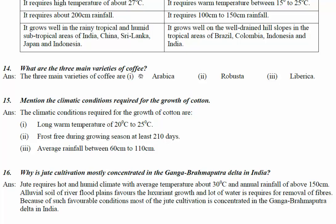Question number 14: what are the three main varieties of coffee? They are Arabica, Robusta, and Liberica. Question number 15: mention the climatic conditions required for the growth of cotton.